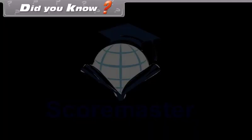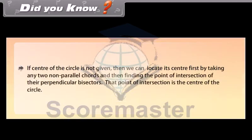Did you know? If the centre of the circle is not given, then we can locate its centre first by taking any two non-parallel chords and then finding the point of intersection of their perpendicular bisectors. That point of intersection is the centre of the circle.